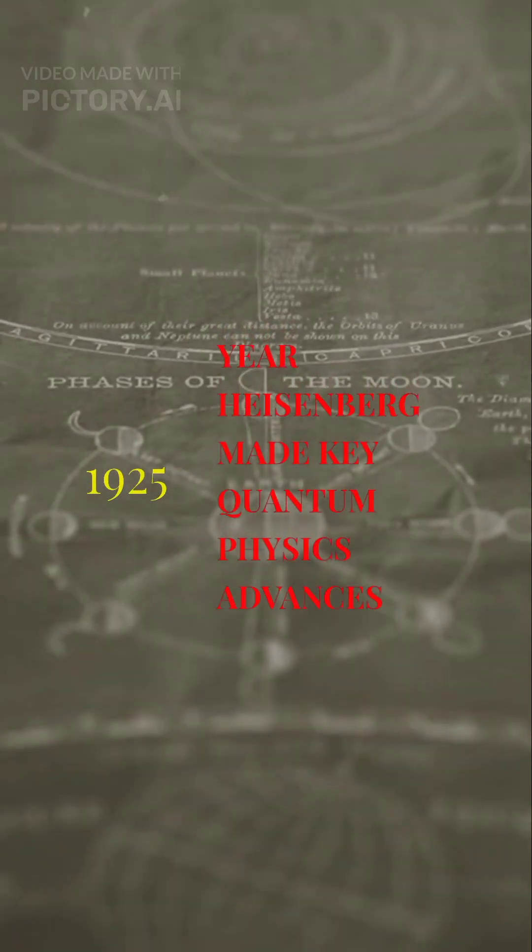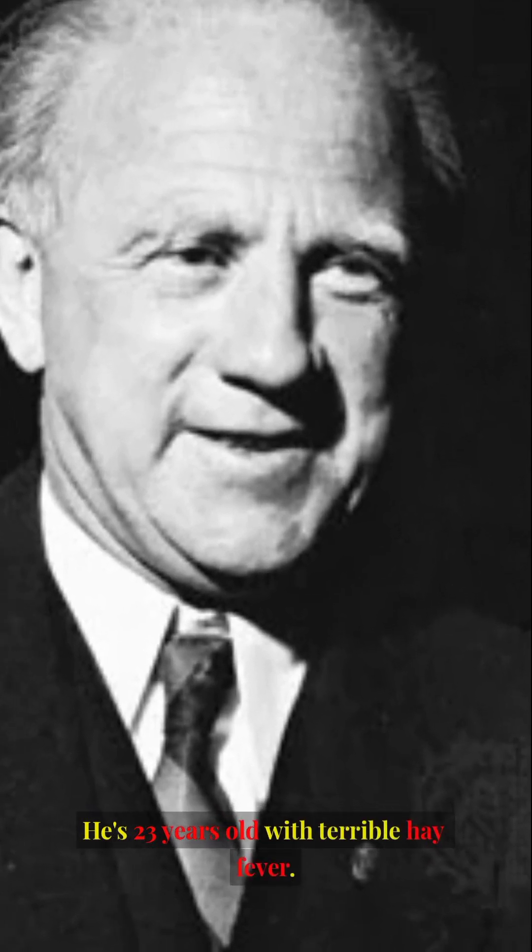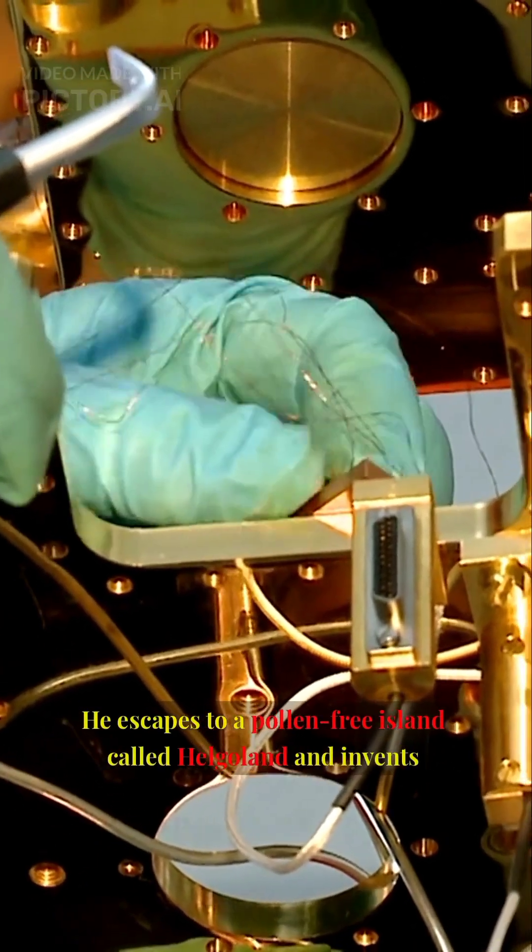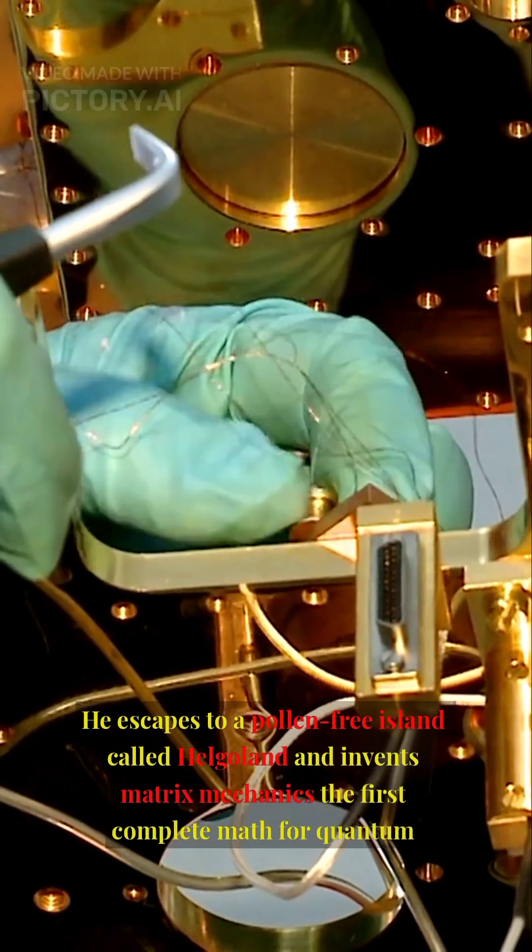1925. He's 23 years old with terrible hay fever. He escapes to a pollen-free island called Helgoland and invents matrix mechanics, the first complete math for quantum physics.